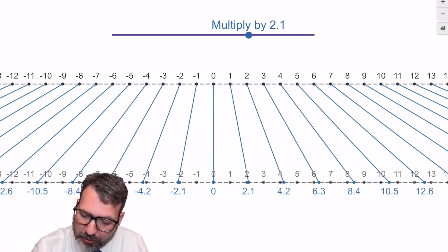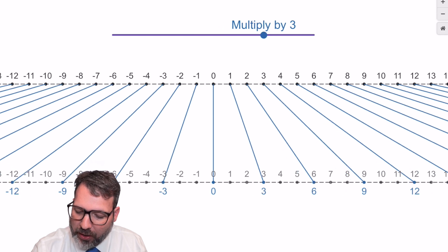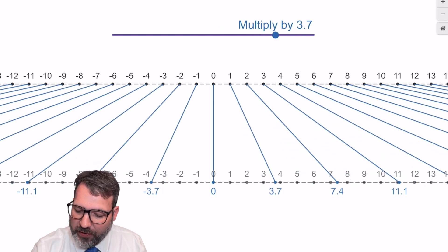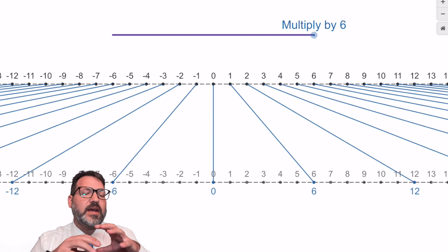If we make our scalar larger, it just increases the scale on that bottom number line. And of course, we can make it very, very large. And as we do that, that lower number line just spreads out further and further.